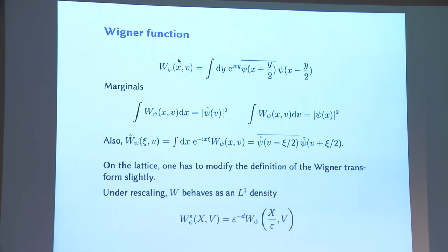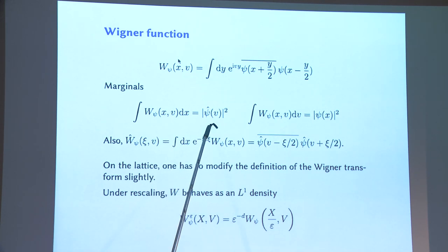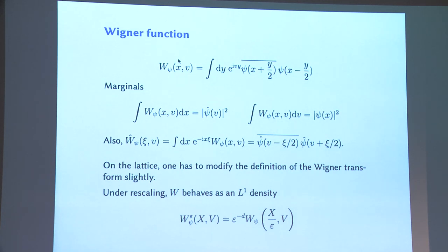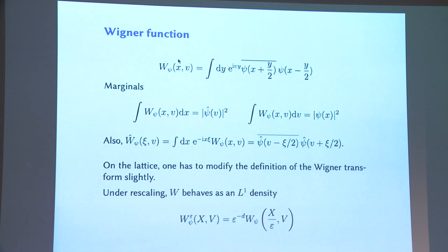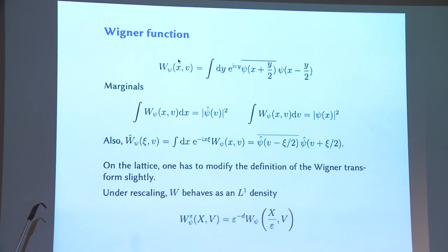If you integrate the Wigner function over x, you get the quantum mechanical distribution in momentum space, and vice versa. If you take a second Fourier transform in the x variable, you get the combination of psi and its conjugate complex in momentum space. On a lattice you need to be careful because of the factor of 1/2 — you go to a lattice with half the spacing. The integral of W over both variables equals the integral of |psi(x)|^2, which is normalized to one.